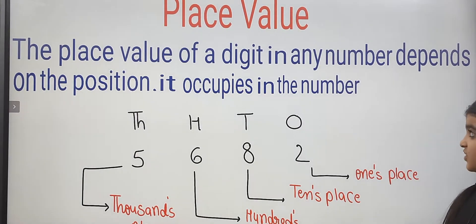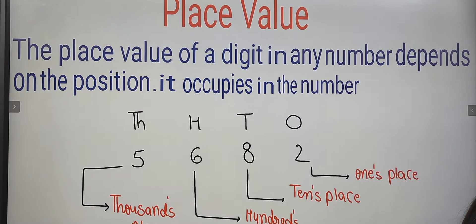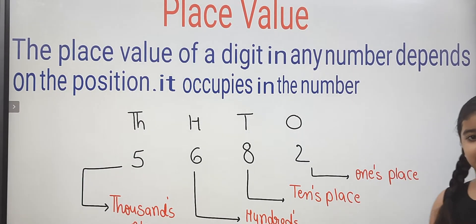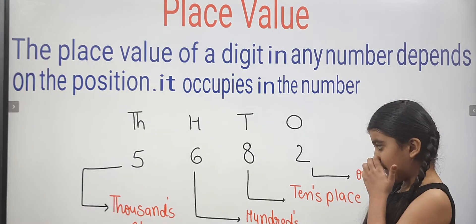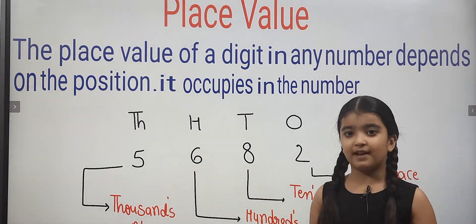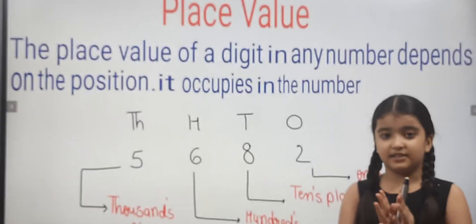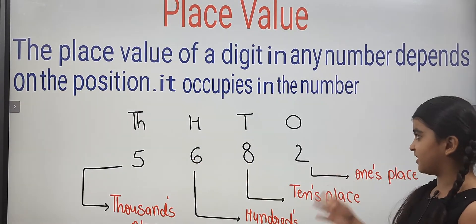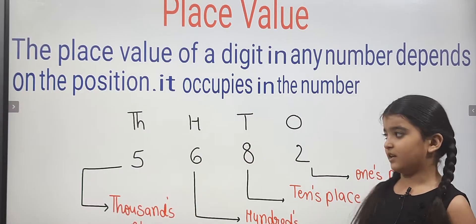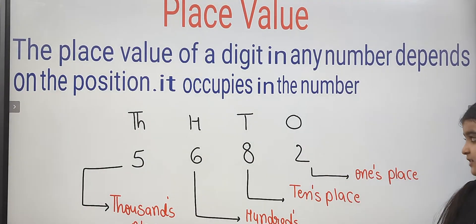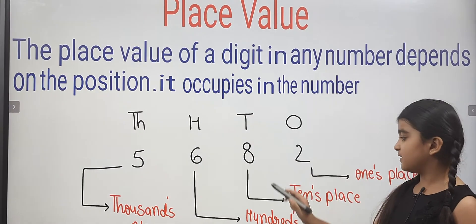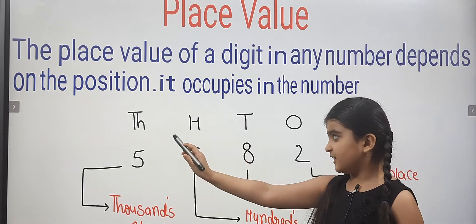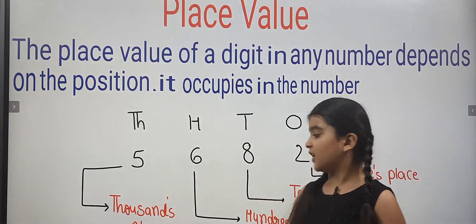The place value of a digit in any number depends on the position it occupies in the number. Place Value means any digit of its place. Ones means Ones Place. T means Tens Place. H means Hundreds Place. T means Thousands Place.